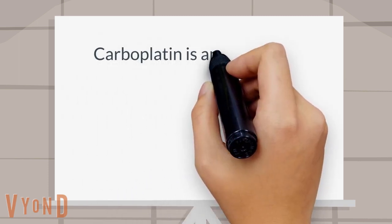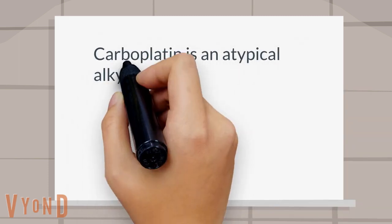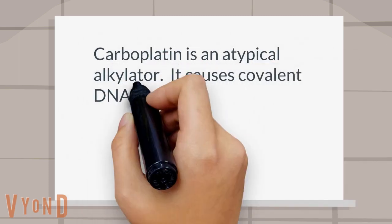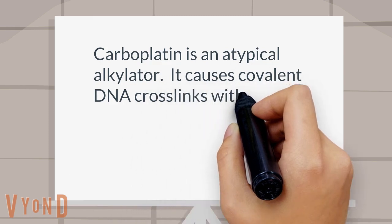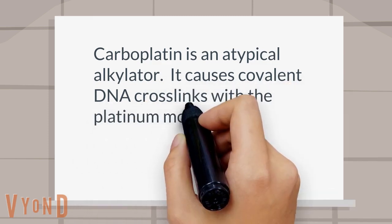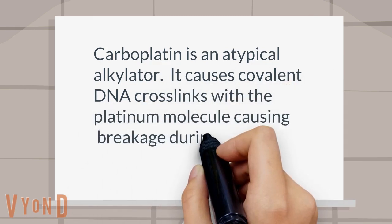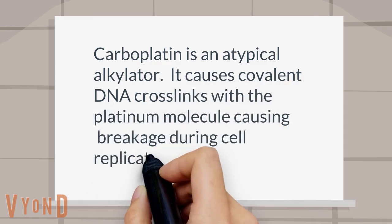Carboplatin is an atypical alkylator. It causes covalent DNA cross-links with the platinum molecule, causing breakage during cell replication.